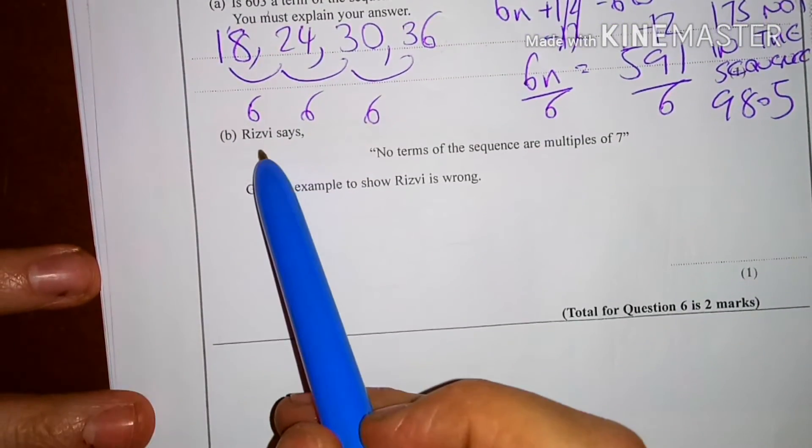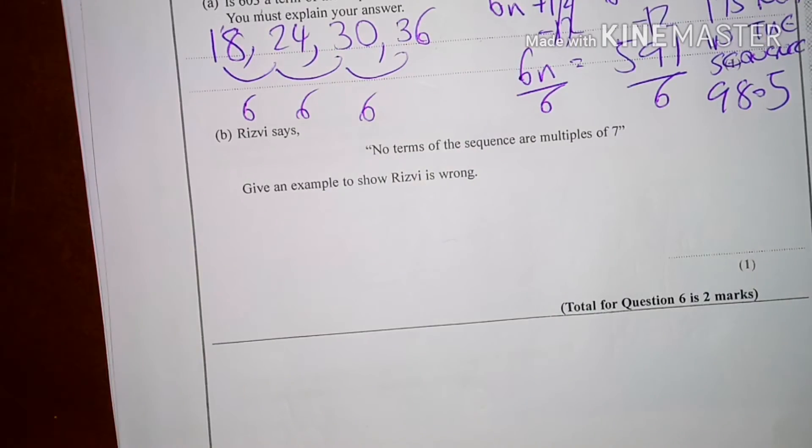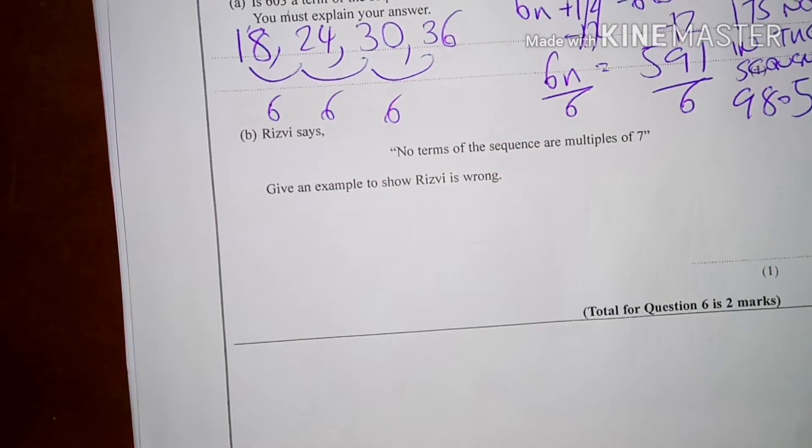Right, next bit. Rizvi says no terms in the sequence are multiples of 7. Give an example to show Rizvi is wrong.